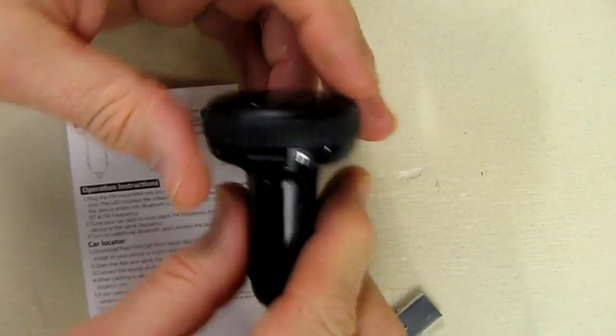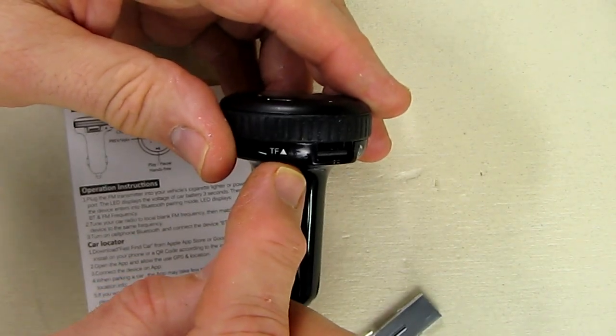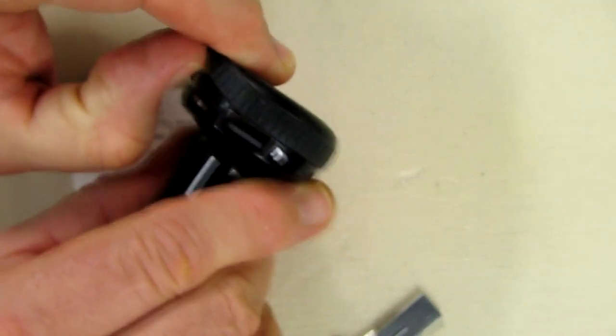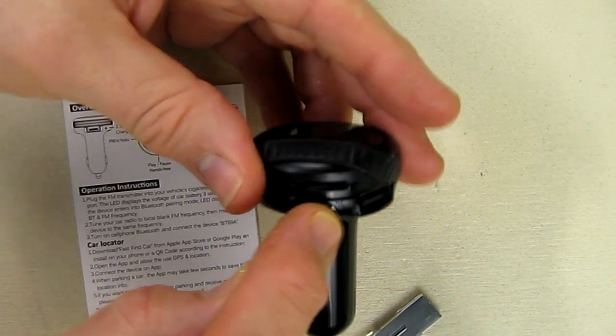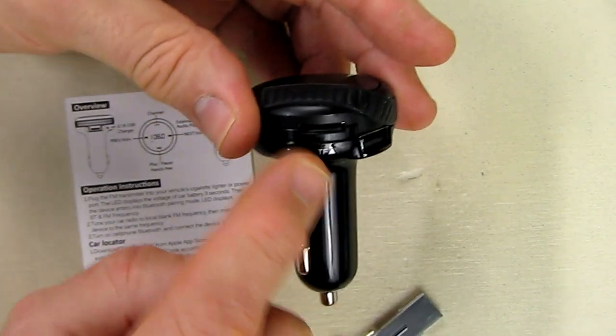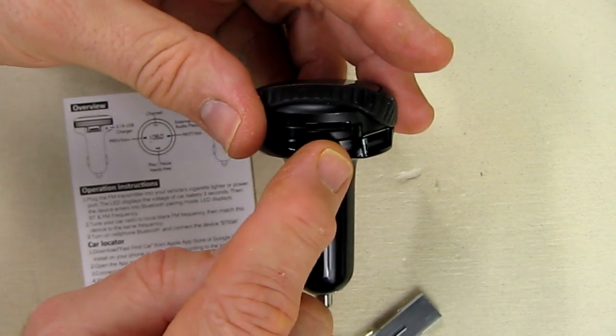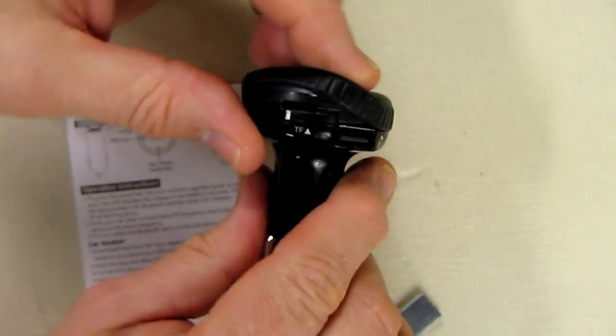Also, there is a rubberized coating on here. You see the word TF card? If you remove the little rubber cover you have a TF card slot. It's hard to pick it up in the camera. But that's also where you could put music files MP3 or WAV files and play them on there.